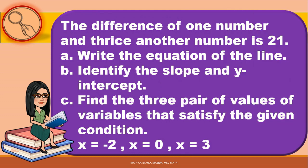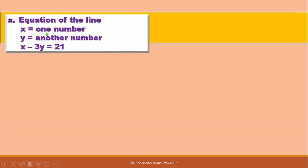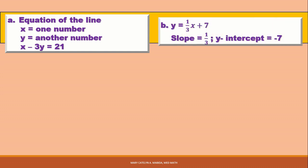Example 3: the difference of one number and thrice another number is 21. Write the equation of the line, identify the slope and y-intercept, and find three pairs of values of variables that satisfy the given condition where X equals negative 2, 0, and 3. Let X be one number and Y be another. The difference of one number and thrice another equals 21, giving us X minus 3Y equals 21. Changing to slope-intercept form Y equals MX plus B, the equation becomes Y equals one-third X minus 7. So the slope is one-third and the y-intercept is negative 7.